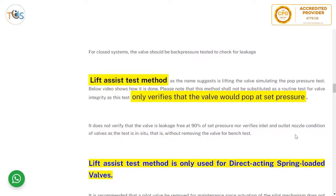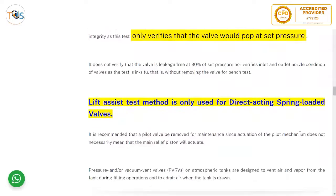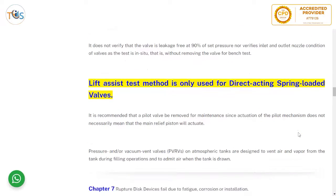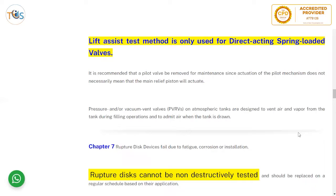For a closed system the valve should be back-pressure tested to check for leakage so there is no backflow of fluid. The lift assist test method simulates the top pressure test by lifting the valve. Note that this method shall not be substituted as a routine test for valve integrity, as it only verifies that the valve pops at set pressure. It does not verify that the valve is leakage-free at 90% of set pressure, nor does it verify inlet and outlet nozzle condition, since the test is in-situ without removing the valve for bench testing. The lift assist test method is only used for direct-acting spring-loaded valves.